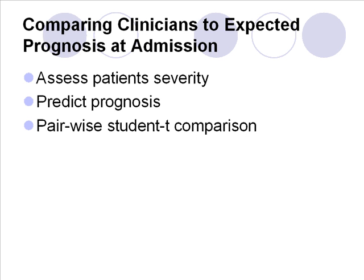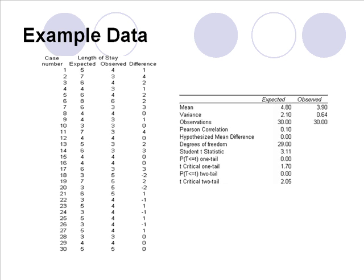Another way of doing severity adjustment is to assess the patient's severity, predict the prognosis of the patient on admission, and calculate pairwise student T comparisons of observed and expected values to see if the patient's outcomes fit our expectations. Here is an example: we see data on length of stay as expected based on severity and as observed, and we calculate the difference using a pairwise T distribution to compare whether these differences were statistically significant.